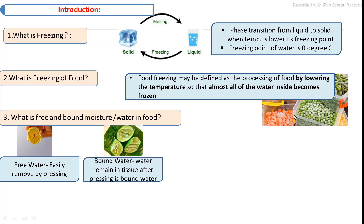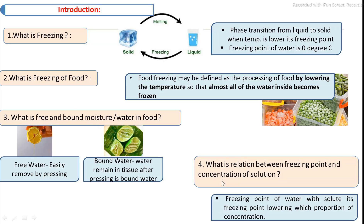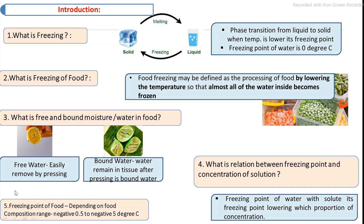Food composition — including carbohydrates, protein, and fat — is related to its freezing point temperature. As the concentration of the solution increases, its freezing point decreases. The average range of the freezing point of food is approximately negative 0.5 to negative 5 degrees Celsius, depending on composition.